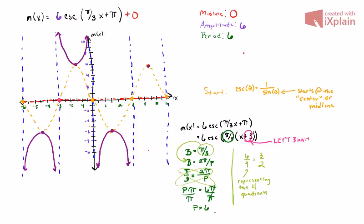And there you have it. Here is our rough sketch of our cosecant function. I hope this was helpful. If you have any other questions, please let me know.